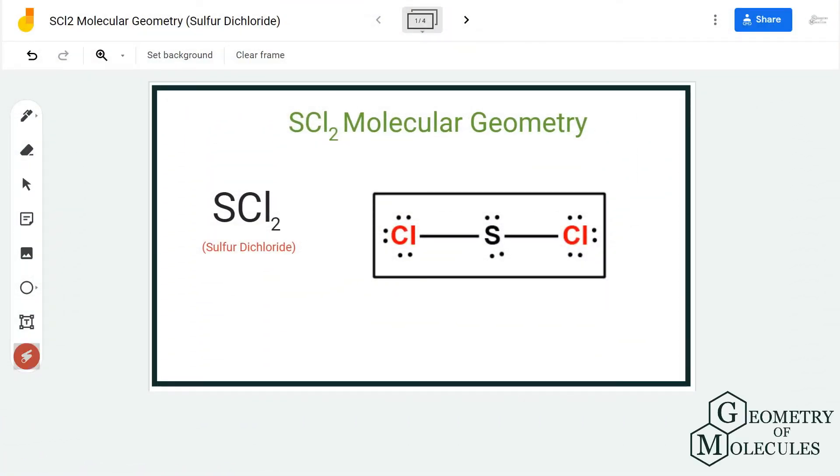Hi guys, welcome back to our channel. In today's video we are going to determine the molecular geometry, shape, and bond angles for SCl2 molecule. It is the chemical formula for sulfur dichloride.